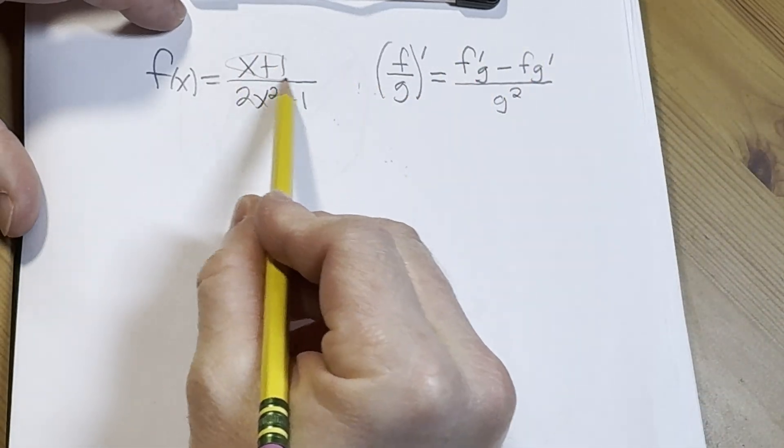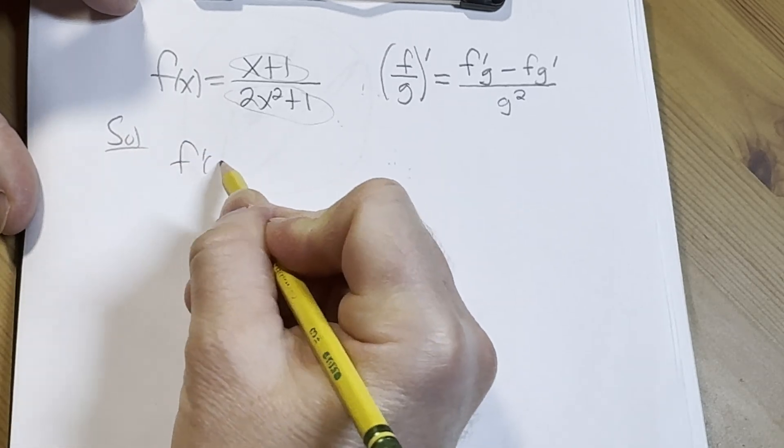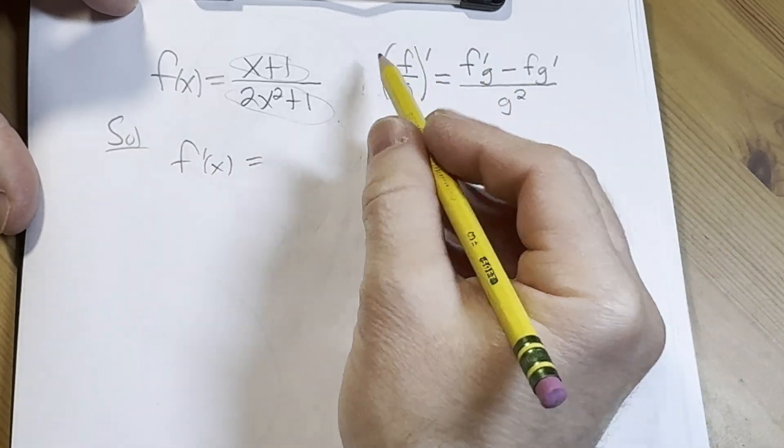So this is the top, this is the bottom. Applying the quotient rule, we find f prime of x.